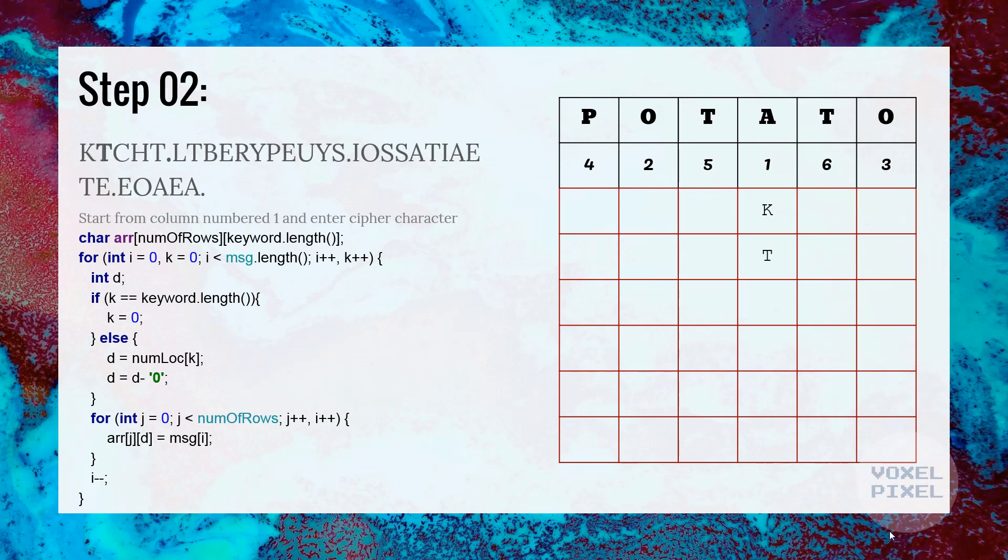Under number 1, first letter K, followed by T, then C, H, T, and dot. Then all the rows are filled.